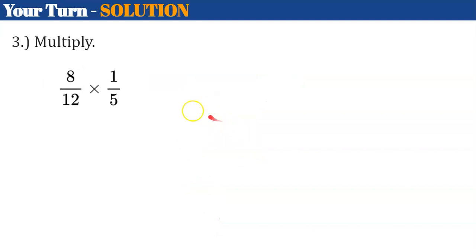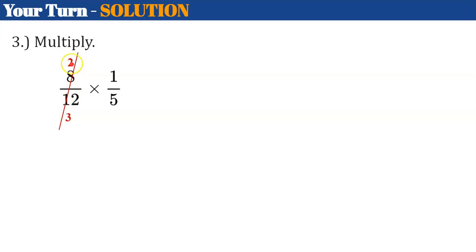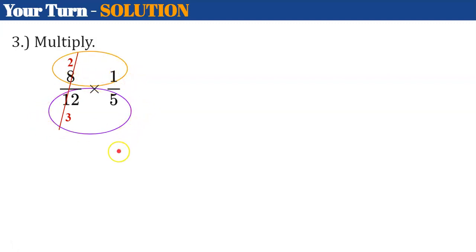Here's number 3 — you were to multiply. The first thing we want to do is check for common factors. One-fifth is in simplest form, but eight-twelfths is not — both the numerator and denominator are divisible by 4. Eight divided by 4 is 2, and 12 divided by 4 is 3. Now multiply: 2 times 1 is 2, and 3 times 5 is 15. The answer is two-fifteenths, in simplest form.